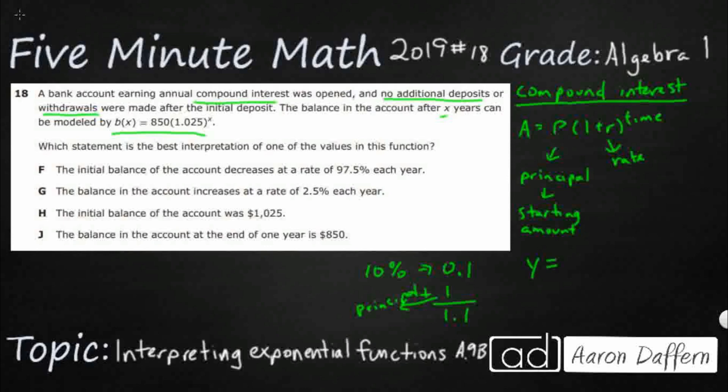Well y equals a b to the x power. That is our standard algorithm, our standard function that we're going to use when we're dealing with exponents here. And this a is going to be our principal. So that's going to be our initial starting amount. This b is simply this right here, 1 plus r. So that's your rate. But we're assuming it's 1 plus the decimal.